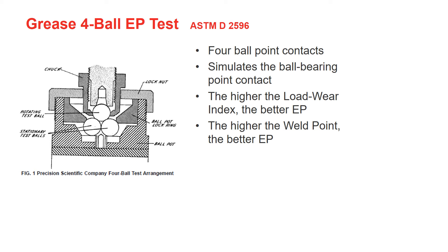Then we rotate the upper ball at 1,770 RPM and apply a vertical force. Little by little, we increase the force and at specified intervals we measure the wear scar diameters on the balls. This gives us an indication of how the extreme pressure additive is behaving under this test condition. The weld point is the lowest applied load at which either the rotating ball seizes and welds to the three stationary balls, or at which extreme scoring of the three stationary balls occurs.